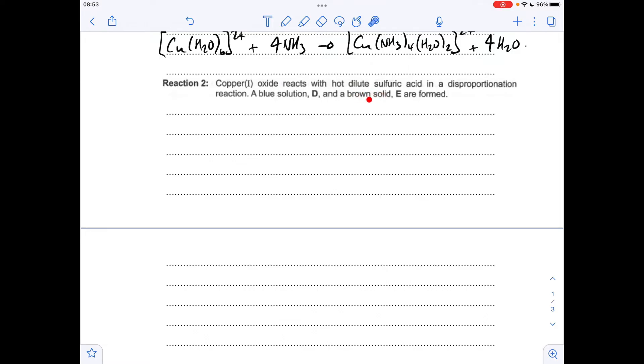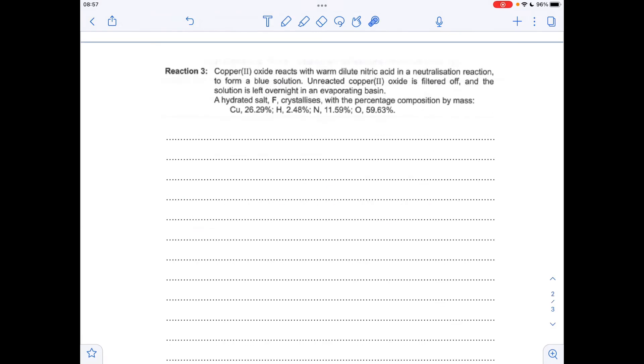D is going to be copper sulfate - it's actually the Cu(H2O)6 2+ ion that causes the blue color, so you could have given that as an answer as well. And E is copper, the metal itself. There's the equation there and I've just put the oxidation numbers for the copper species above in red.